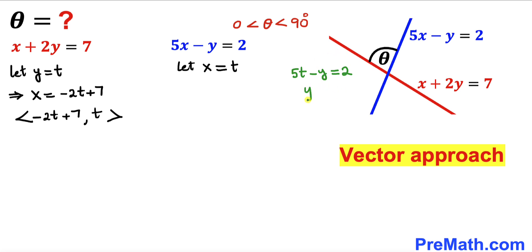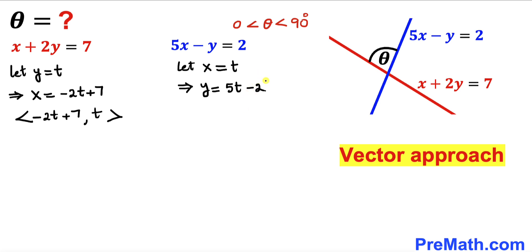So therefore we end up with y equals to 5t minus 2. So therefore we can write that y is going to be equal to 5t minus 2, as you can see over here.